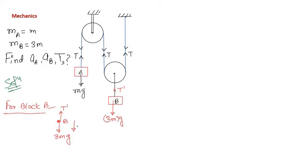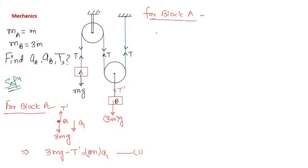Let the acceleration of block B be a1. Newton's equation of motion for block B gives: 3mg − T' = 3m·a1 — call this equation (1). For block A, with mass m, tension T upward, weight mg downward, and acceleration a2, Newton's law gives: T − mg = m·a2 — call this equation (2).